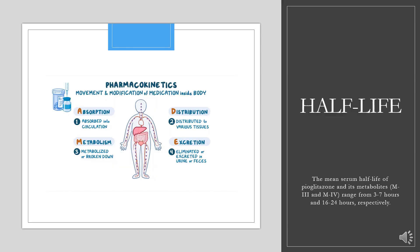The mean serum half-life of pyoglitazone and its metabolites M3 and M4 range from 3 to 7 hours and 16 to 24 hours, respectively.